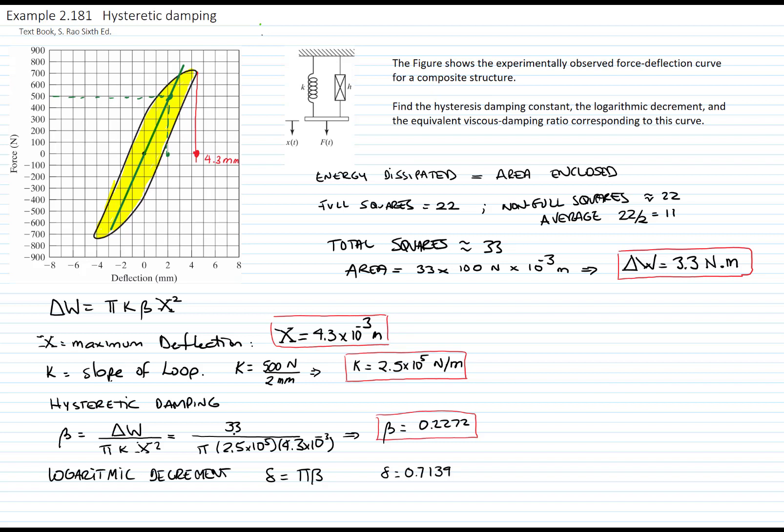And I can also find the damping ratio. The damping ratio equals beta over 2, and that damping ratio is an equivalent damping ratio to a viscous damping system. That will be equal to 0.1136.